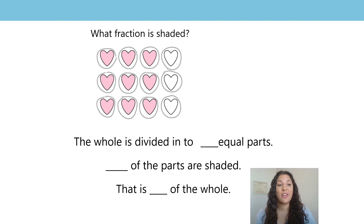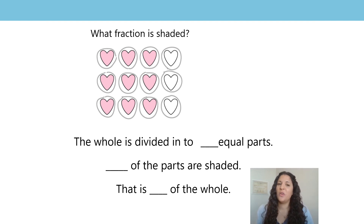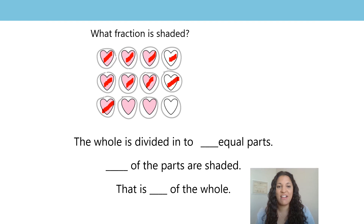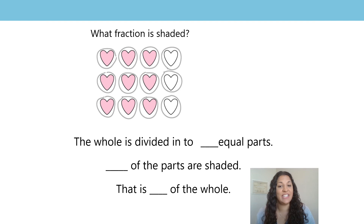Let's go through this first question together. It says: what fraction is shaded? First of all we have to count how many equal parts we have. I count 1, 2, 3, 4, 5, 6, 7, 8, 9, 10, 11, 12. So the whole is divided into 12 equal parts.